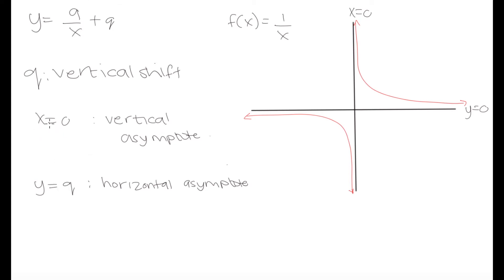The reason x = 0 is our vertical asymptote is that if we plug zero into our function, we get y = a/0 + q. Anything divided by zero is undefined — we get a math error. Our function is never going to have a value where x = 0; it will approach zero but never equal zero. That is why x = 0 is our vertical asymptote.